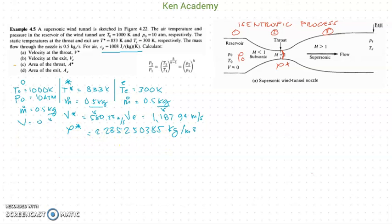Now, we are still looking for the area of the throat. The solution to get the area of the throat is that it can only be solved by using the mass flow rate equation.